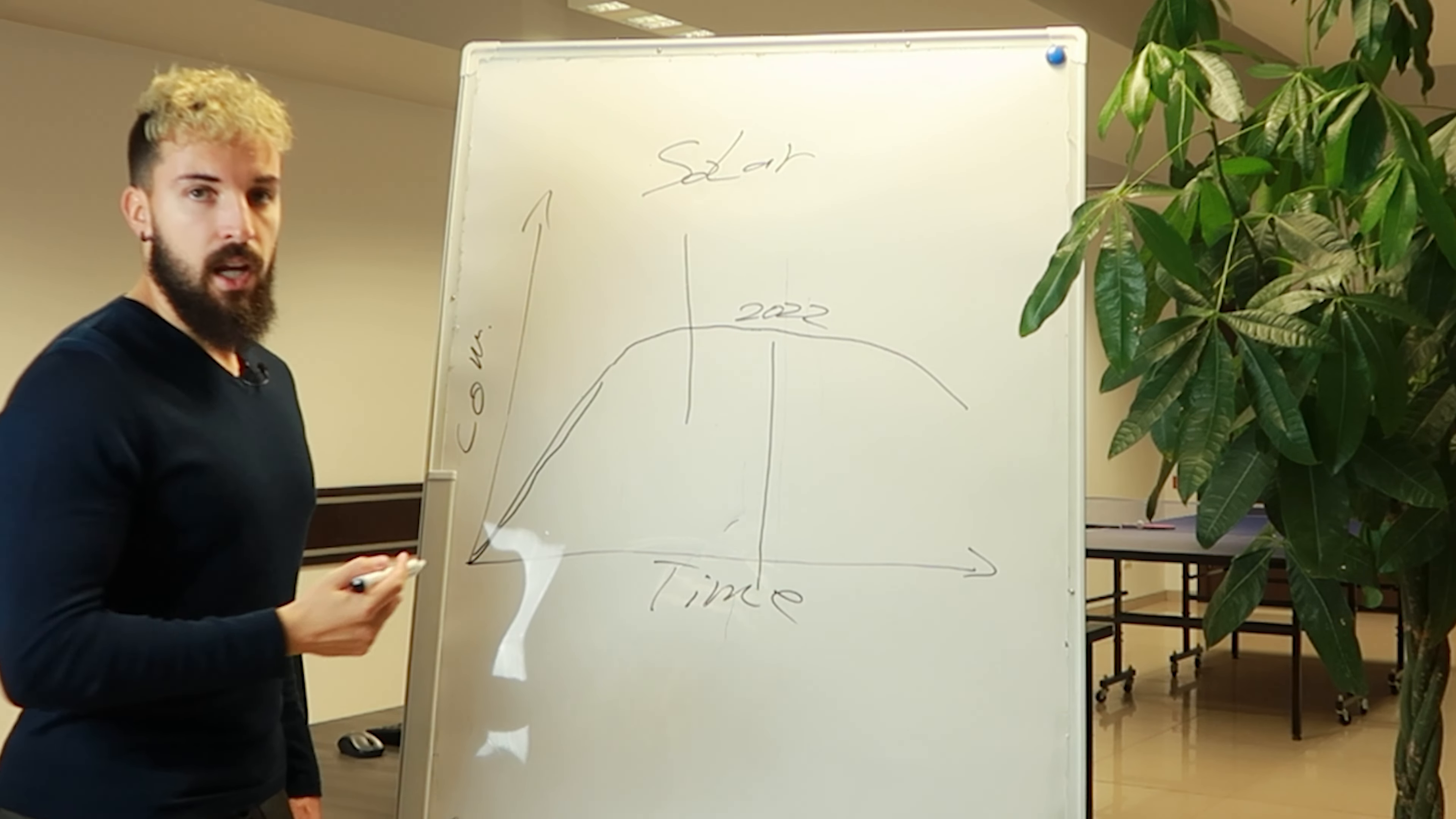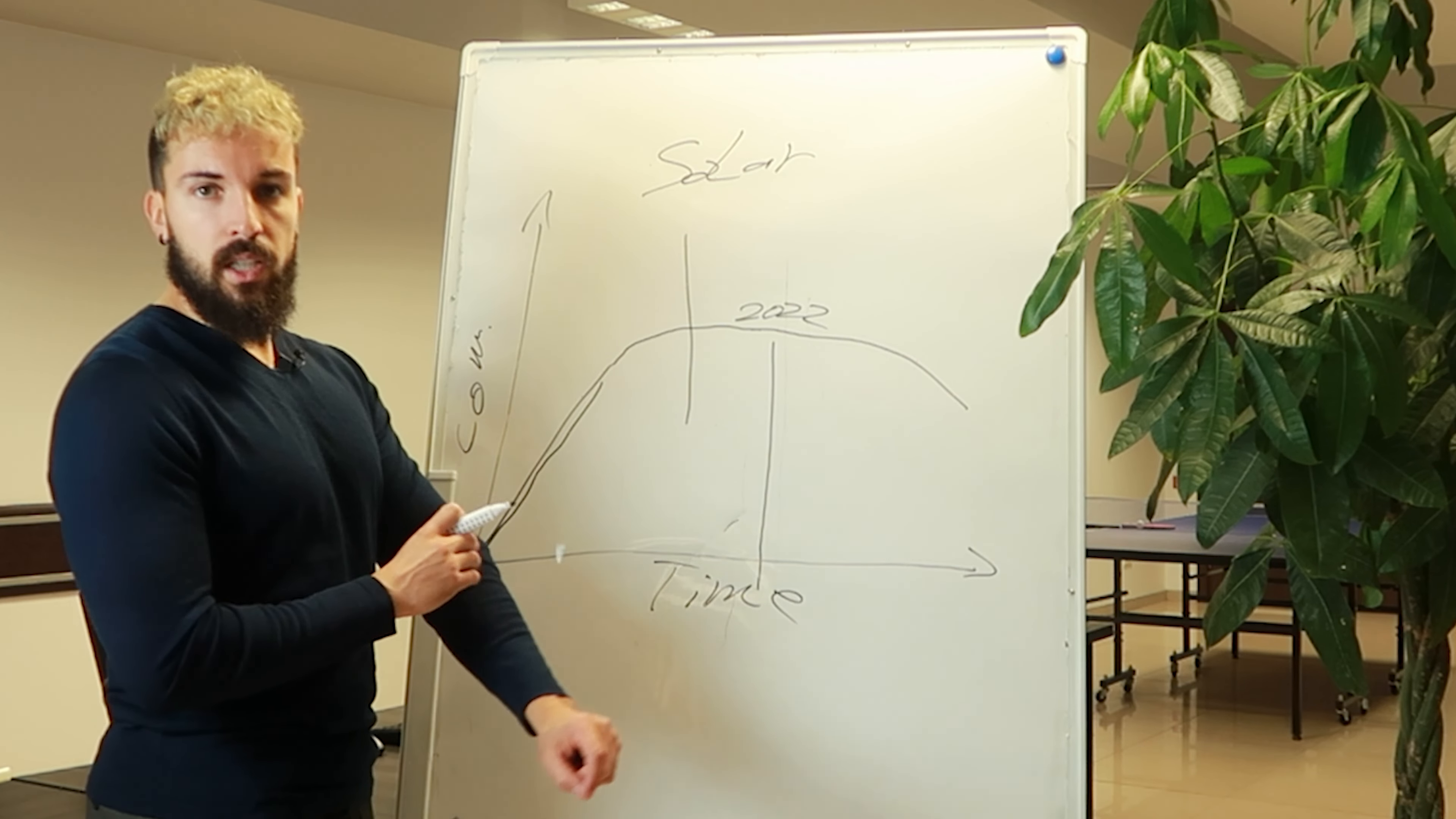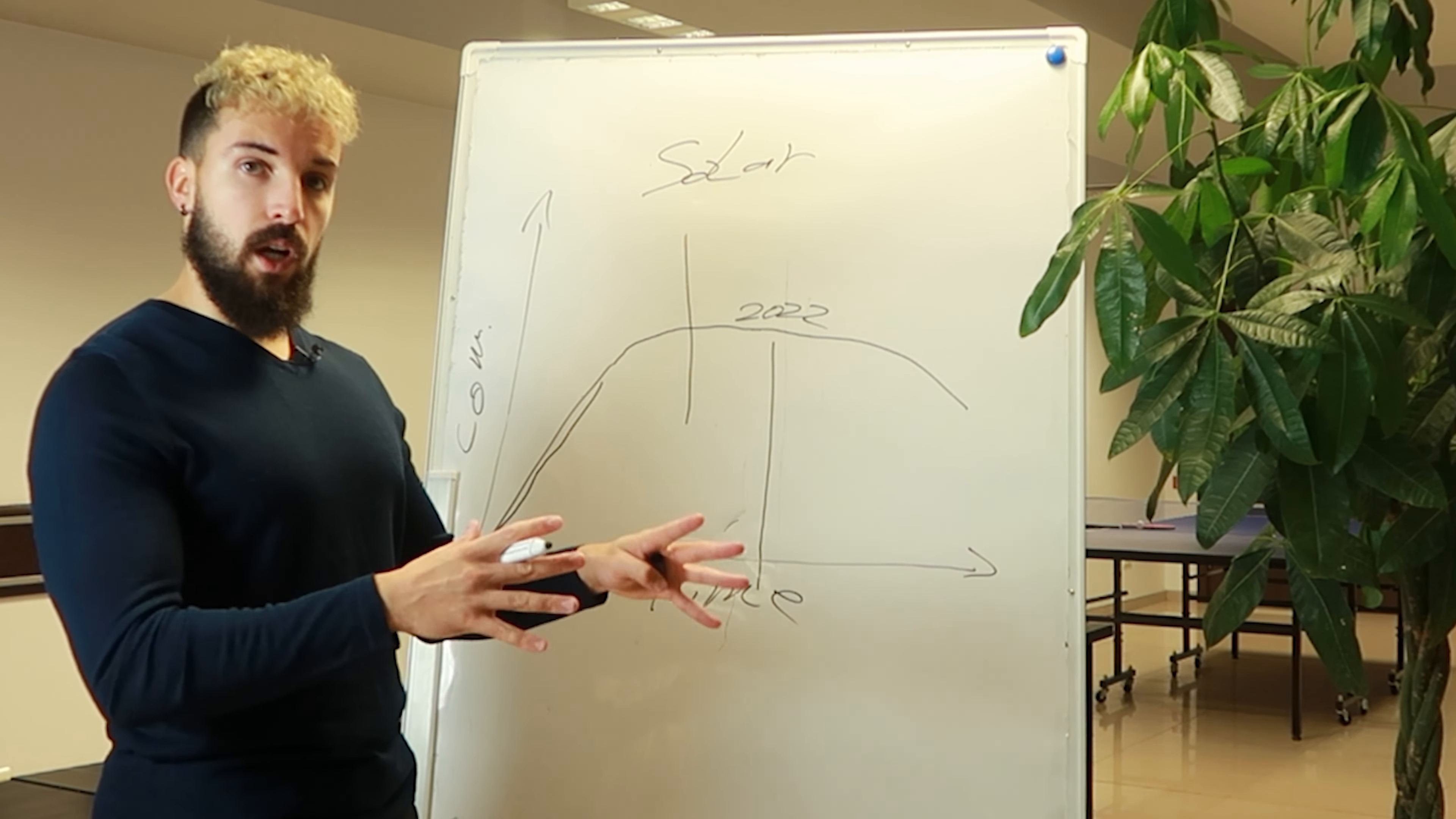And what I mean by that is a lot of the big companies in solar are starting to get bought out by other companies that are giants in the industry, like Vivint, they got bought out. ADT is actually buying one of the biggest solar companies. I think ADT is going to buy into Sunpower. And so a lot of these big companies are going to start buying a lot of these big solar organizations.